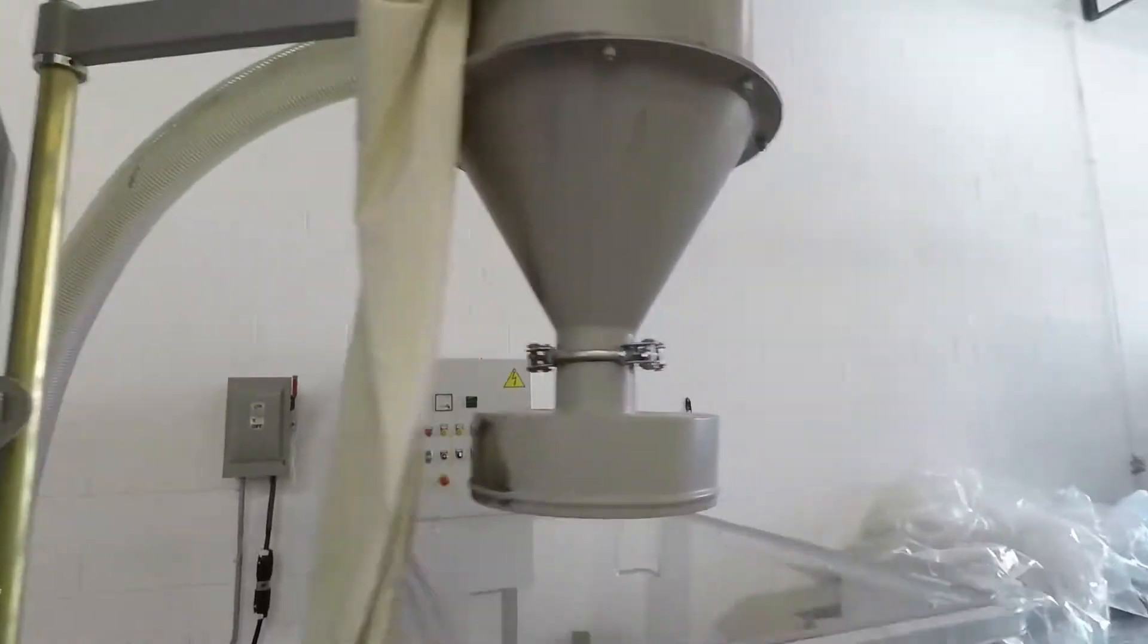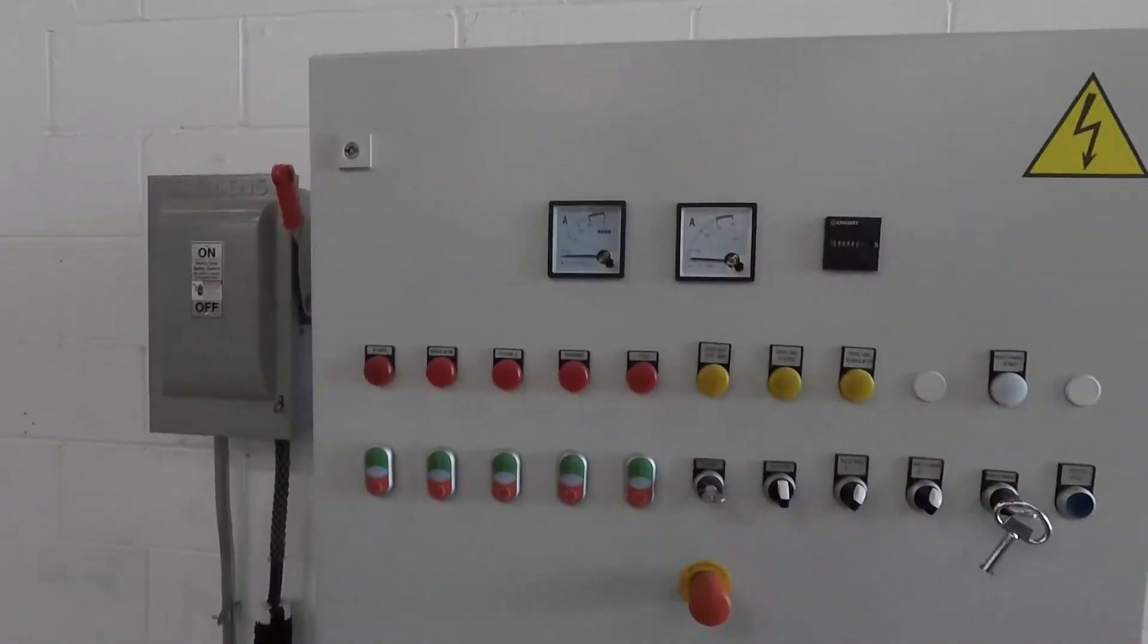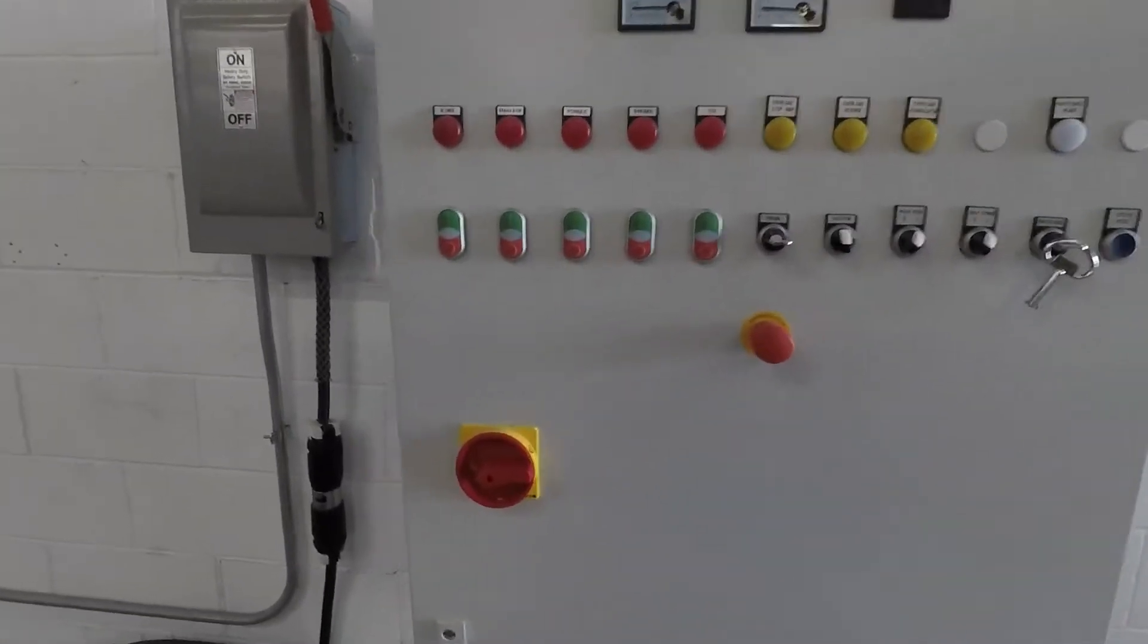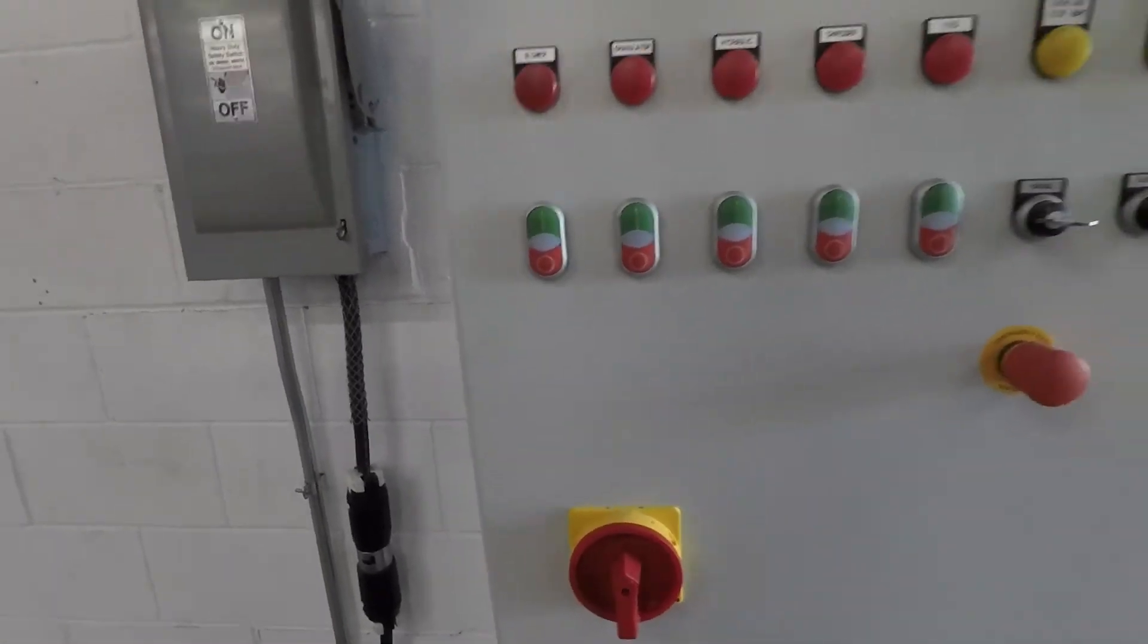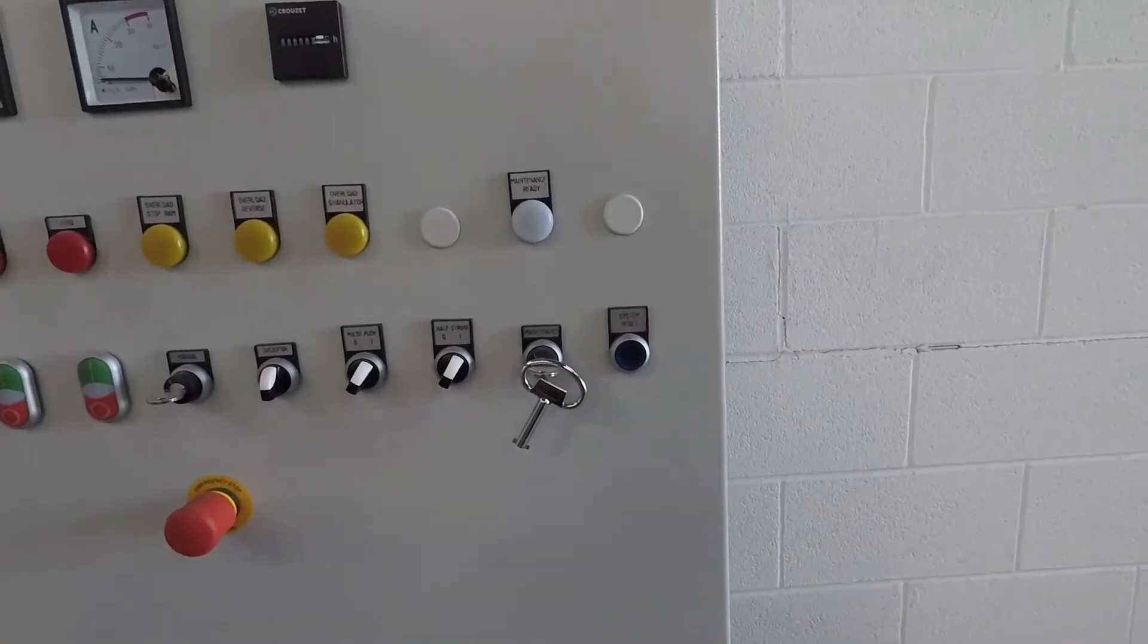They have the same control panel setup. They all run with rams. So you see here's the control panel, amp meters for both the shredder and the granulator. Go ahead and start. Do the system reset, make sure all the safeties are good.